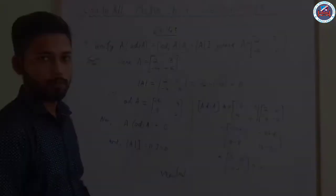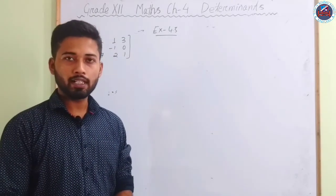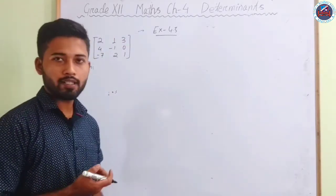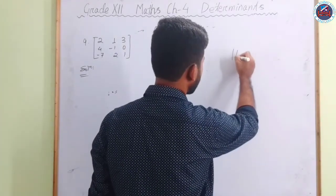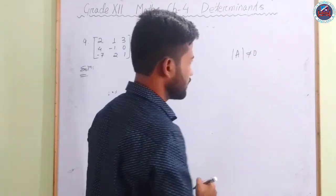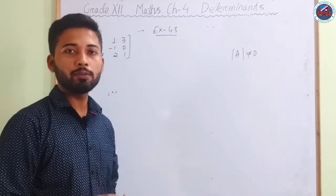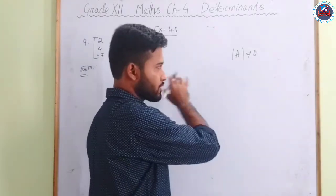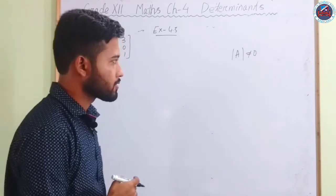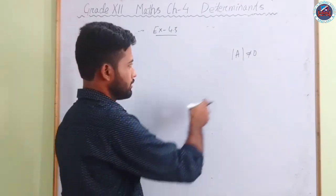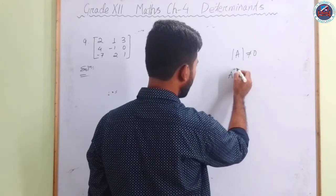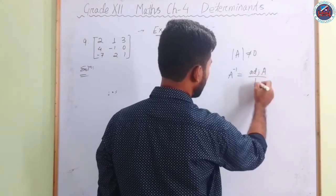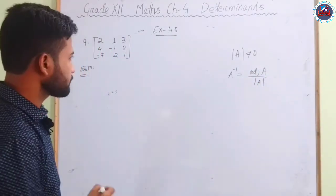Question 9 asks us to find the inverse of the given 3×3 matrix. First, we must check whether the matrix is non-singular. We need to show that det(A) ≠ 0. Only if it is non-singular can we find the inverse using A⁻¹ = adj(A) / |A|.